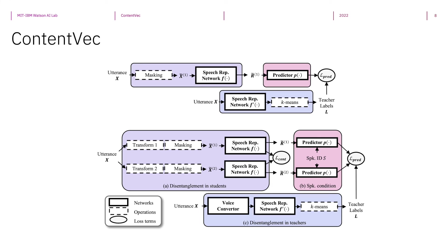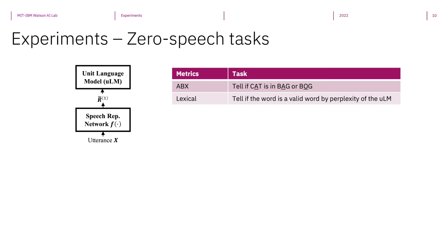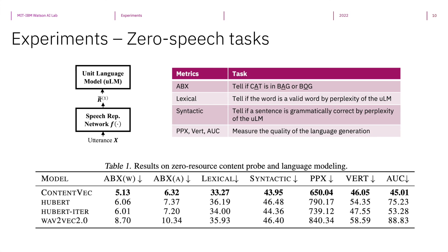We evaluate ContentVec on a variety of content-related downstream tasks. The first set are zero-speech tasks, where the speech representation network and the unit language model on top are evaluated on their ability to capture phonetic, lexical, and syntactic information without text transcriptions. We also evaluated the quality of autoregressively generated speech. The results show that ContentVec has a significant advantage over HuBERT and other baselines.